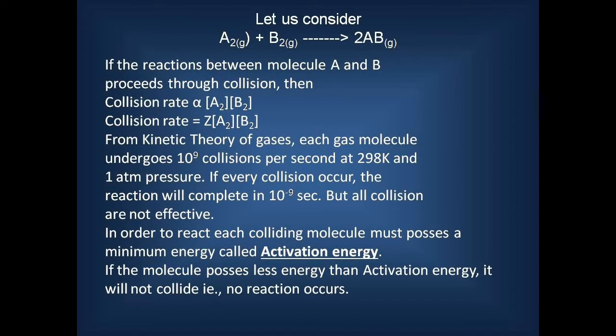Let us consider the reaction between molecule A and molecule B — we get two moles of AB molecule. In this reaction, the reaction occurs between two molecules A and B through collision. The collision rate is directly proportional to the concentration of A and the concentration of B. After replacing the proportionality with a constant Z, we get the equation: collision rate = Z × [A] × [B].